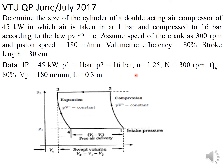To summarize the given data: index n = 1.25, speed N = 300 rpm, volumetric efficiency = 80%. Piston speed (vp) is a new term here — it equals 180 meters per minute. Stroke length L is given as 30 centimeters, converted to 0.3 meters.